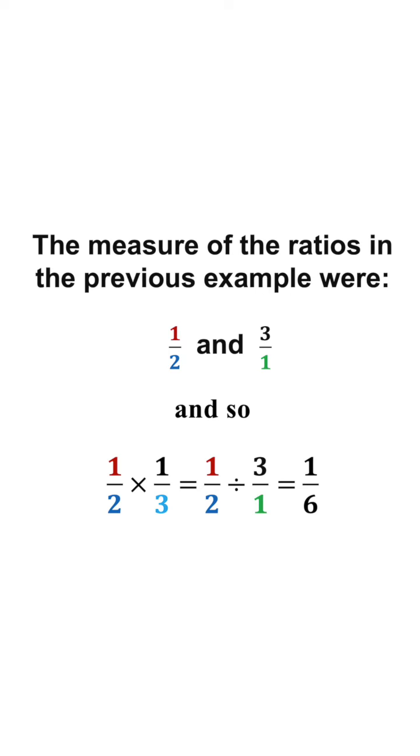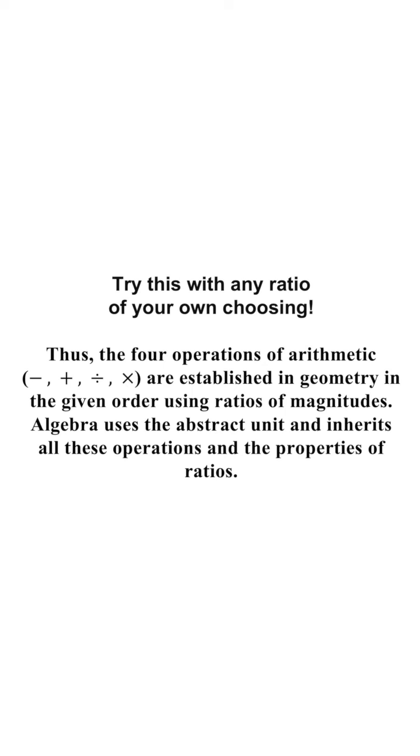For example, if we want to multiply the green-black ratio by the red-blue ratio, we would have a product of one-half multiplied by one-third, which equals one-sixth. But don't just take our word for it. Try it out with any ratio of your choosing.